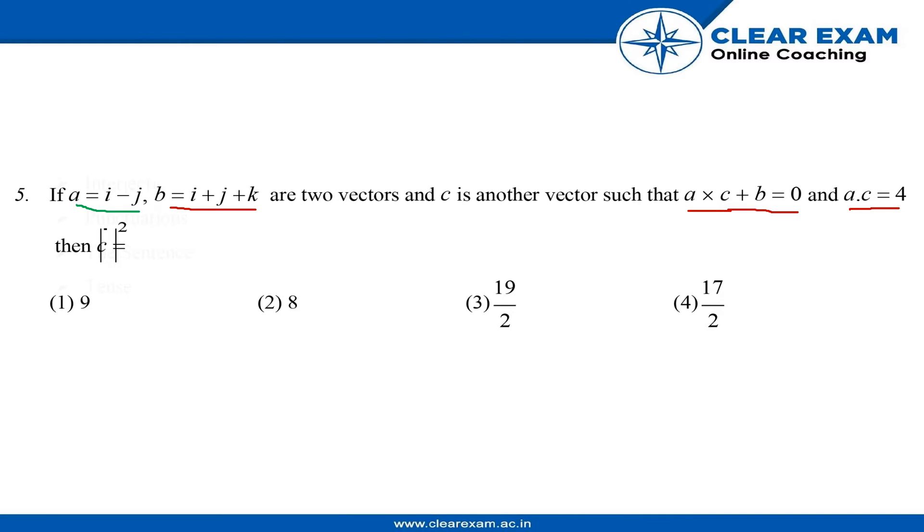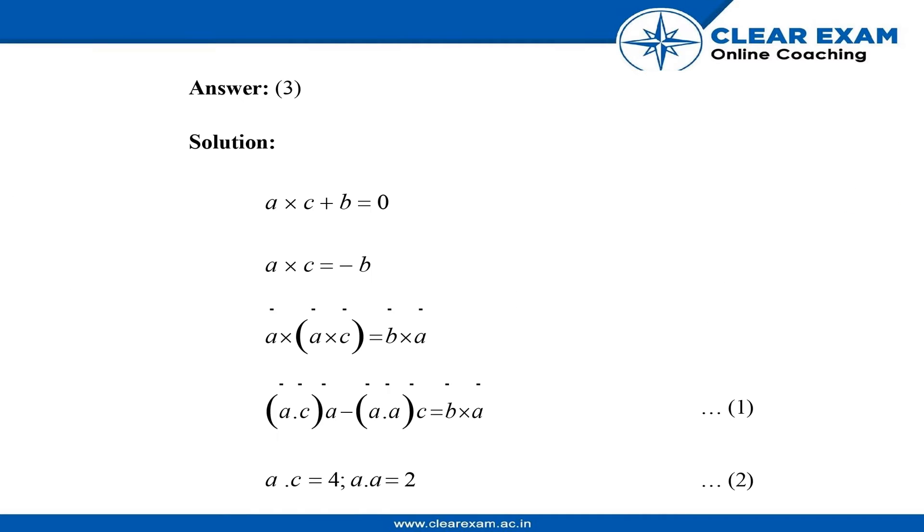Now let us move to the solution part. The answer is the third option. Now let us see the solution. We have the given condition that a cross c plus b equals zero...